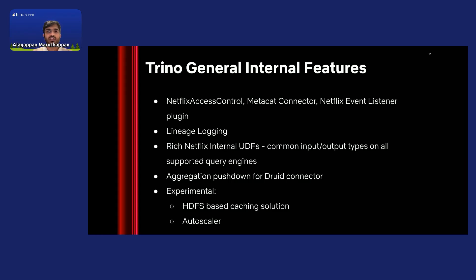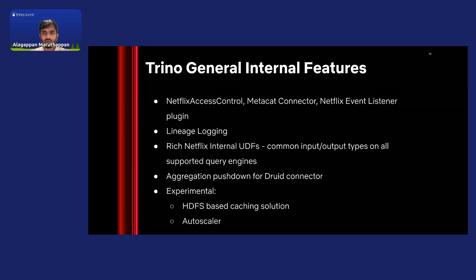We also have a rich set of internal Netflix UDFs. One common problem we see while creating views, upgrading to newer versions, or trying to run the same query in a different query engine is that system function names, signatures, and input/output types have minor variations causing failures. So due to these mild differences in built-in system functions, we started developing a lot of internal Netflix UDFs which have a common signature across query engines — common input/output types and common return types — which helps solve cross-engine querying and view creation to an extent.